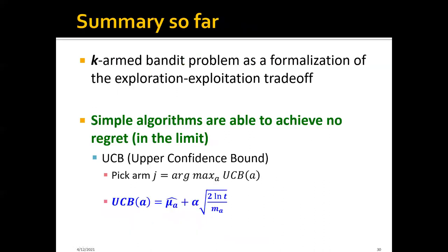To briefly summarize: we have discussed the K-armed bandit problem as a formalization of the exploration-exploitation trade-off, and discussed simple algorithms able to achieve no-regret in the limit. We focused on the UCB algorithm — upper confidence bound — where in each round we pick the arm with the largest upper confidence bound. This upper confidence bound for a specific arm is the sum of two terms: the average reward calculated for that arm, plus the confidence interval scaled by a hyperparameter α.